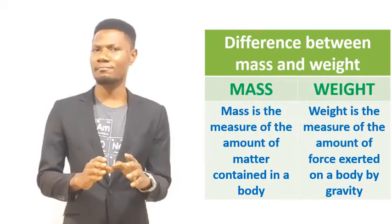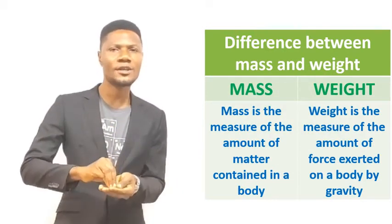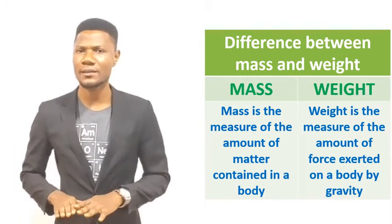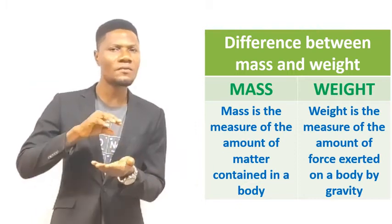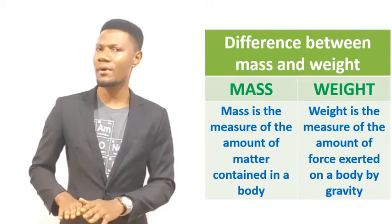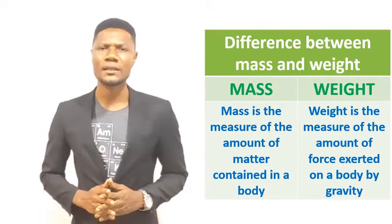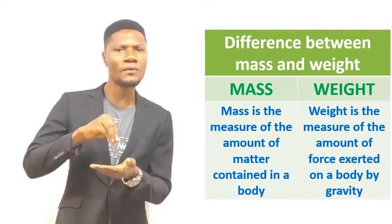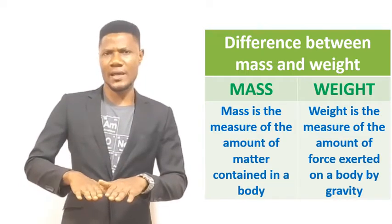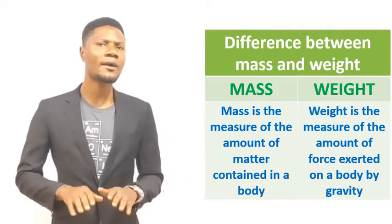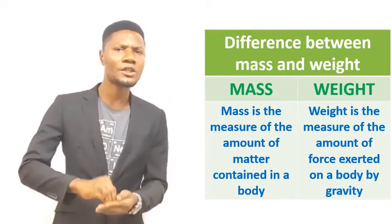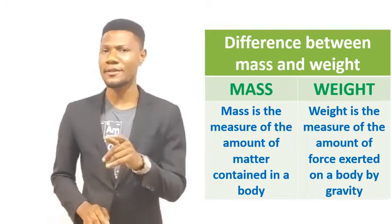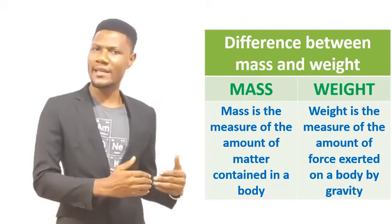The mass of a body is the measure of the amount of matter contained in the body. But the weight of a body is the measure of the amount of force exerted on the body by gravity.